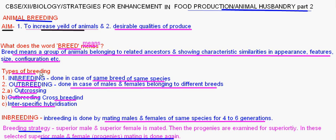There are basically two main types of breeding: inbreeding and outbreeding. Inbreeding is mating done within the same breed of the same species. Outbreeding can be done between different breeds of the same species or different species entirely. Outbreeding is of three main types: outcrossing, crossbreeding, and interspecific hybridization.